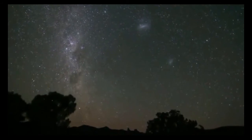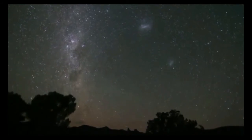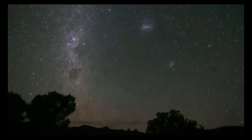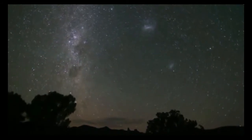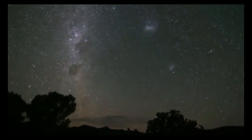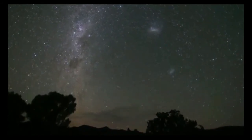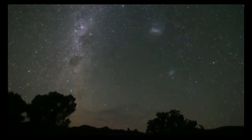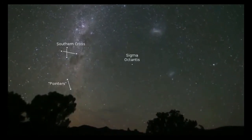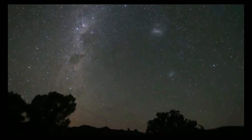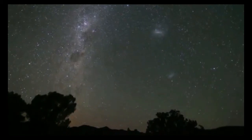In the Southern Hemisphere, when you look to the south, you also see stars rotate around a point. But they are different stars, and they rotate in the opposite direction — clockwise. There is a star named Sigma Octantis very near the Southern Celestial Pole, but it is not a very bright star, so it is difficult to see.